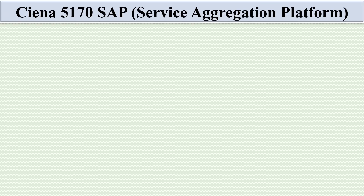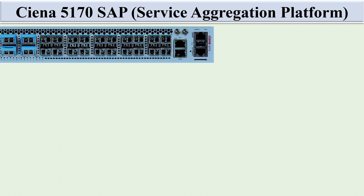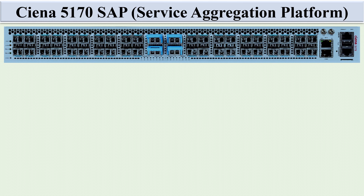Hello friends, in today's video we are going to discuss about the Ciena 5170 SAP Service Aggregation Platform. This is the front view of the Ciena 5170 SAP. You can see the LED status indicators, the different ports including the management console port, sync port, and others.